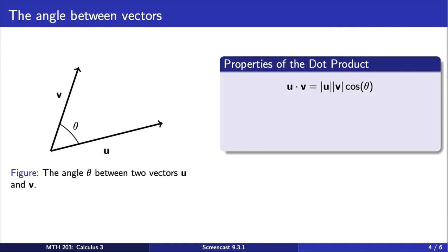which tells us that the dot product of two vectors u and v is equal to the product of the lengths of u and v times cosine of the angle between the two vectors. To see how this relationship is deduced, see section 9.3 of your textbook.